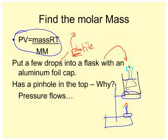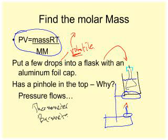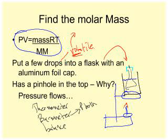The other things you need are a thermometer, a barometer, and a balance. The reason for the hole in the top is so the pressure inside equals the pressure outside. The barometer tells us that pressure for both inside and outside.